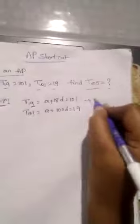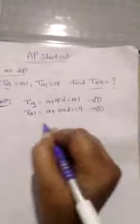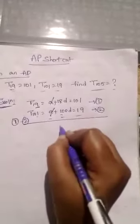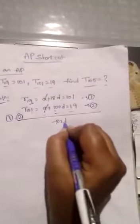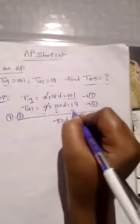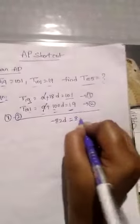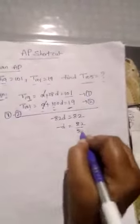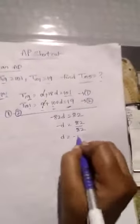This is equation 1 and equation 2. So solve these equations 1 minus 2. A gets canceling. 18 minus 100, minus 82D equal to 101 minus 19, 82. Minus D equal to 82 by 82. D equal to minus 1.